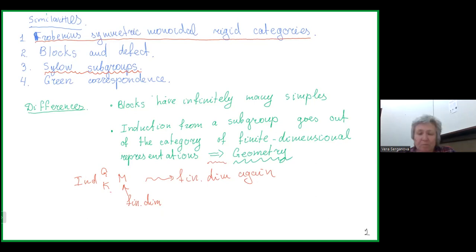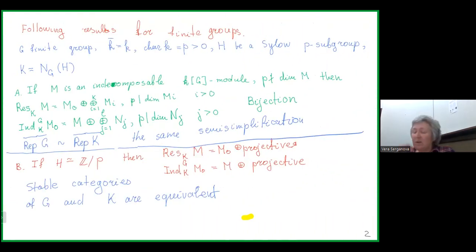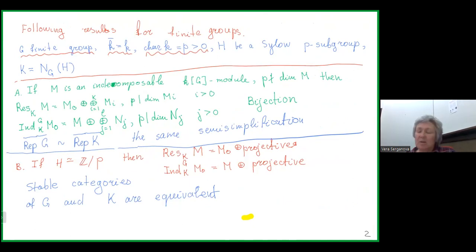Similarly in the super world we have a new interesting geometry which arises from induction. Today I am going to explain the analogs of two results about finite groups. Let us assume that G is a finite group and we work over an algebraically closed field of positive characteristic. We denote by A a Sylow subgroup and by K the normalizer of a Sylow subgroup in G.